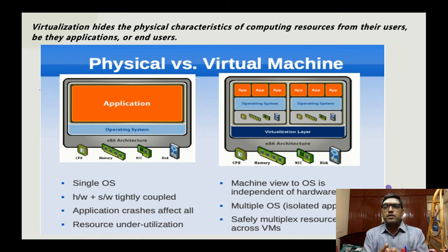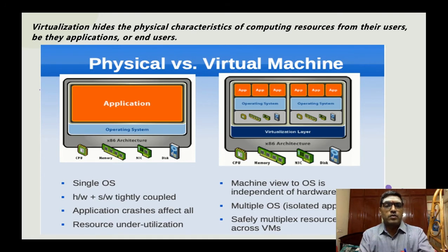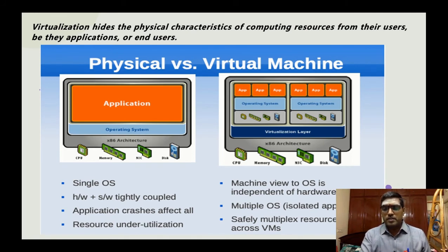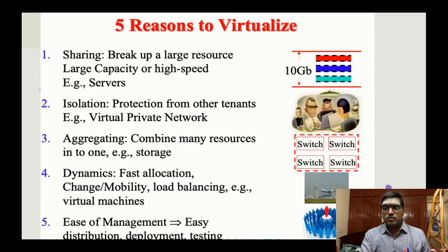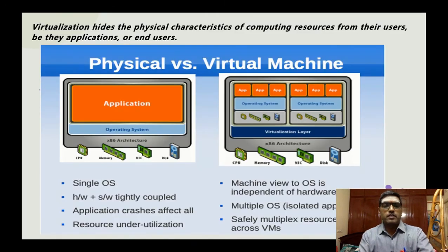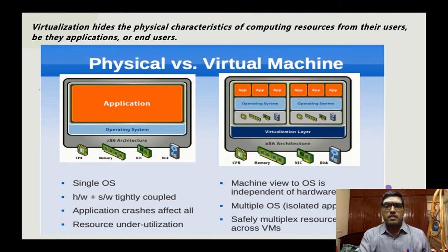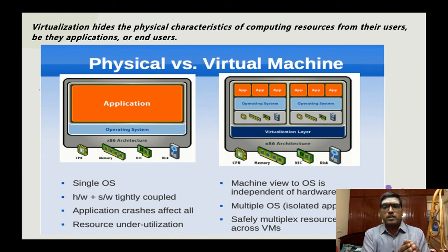Considering physical and virtual machines: what is the physical thing and what is the virtual thing? In a physical machine, one computer has an upper layer of applications and a lower layer architecture — including the computer motherboard, RAM, hard disk, and CPU/processor.